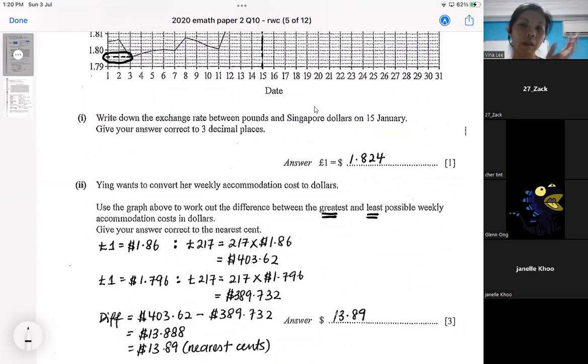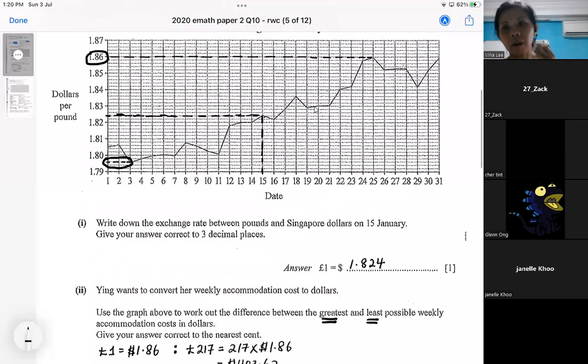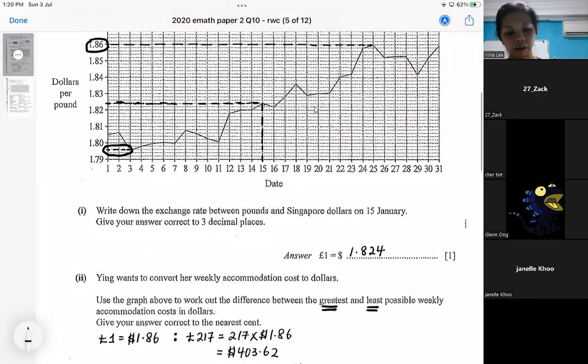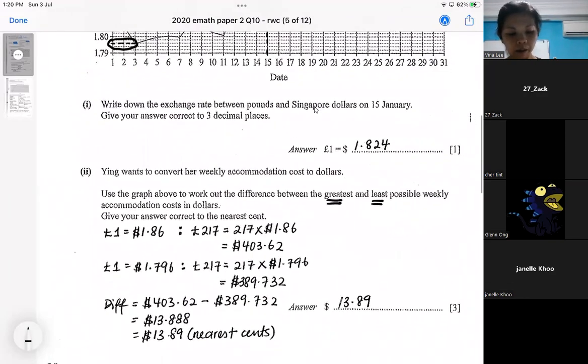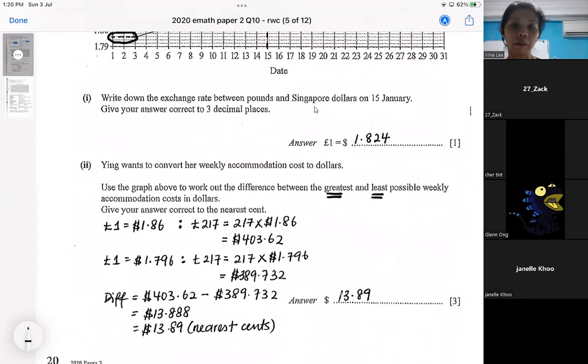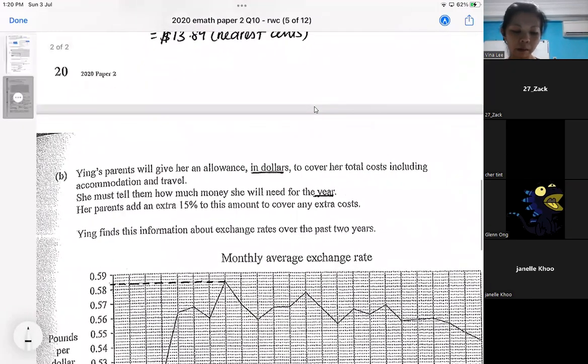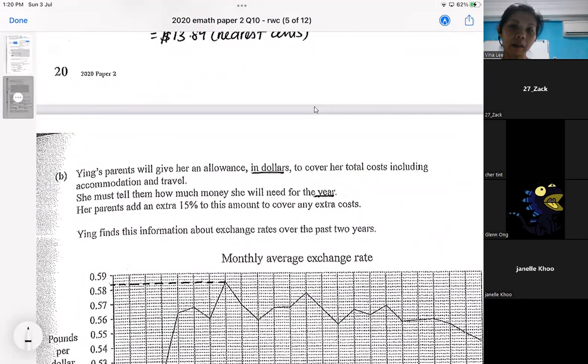So this one later on, I will send it into the group chat. You don't have to worry about copying, more of understand the idea. So usually in a real world context, part one and part two are supposed to be easy. And part one and part two are supposed to lead you to the more difficult one. So in part one, you are taught to read the chart and subsequently, also reading the chart and conversion. So that should help you in part B. I think Glenn, your part B is missing.